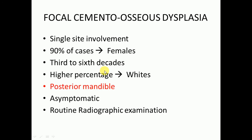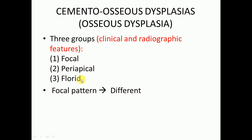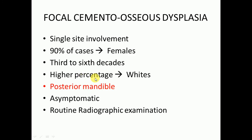In focal cemento-osseous dysplasia, a single site is most commonly involved. It is present in 90% of cases in females, and the third to sixth decade of life is most common. Higher percentages are present in whites, whereas the periapical and florid patterns are more common in black people. It is most common in the posterior mandible.